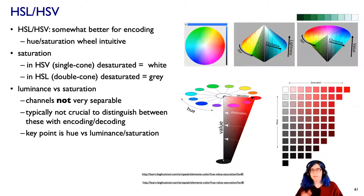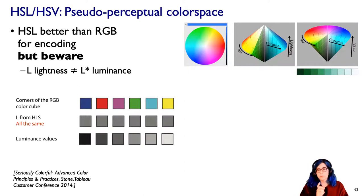One important thing is, again, I really want to emphasize value and saturation are not very separable channels at all. So we typically don't try to distinguish between them when we're visually encoding. We're typically distinguishing between changes of hue versus this luminance saturation combo. But here's what's really tricky: whether it's lightness or value, these are not perceptual. It's not a perceptual color space. These values are not equal to true luminance, which we're going to distinguish as L*.